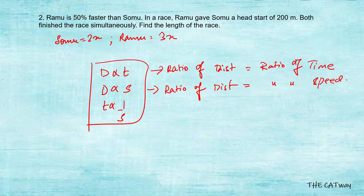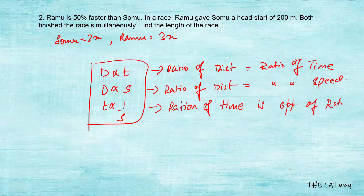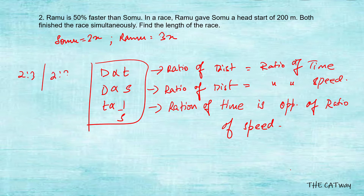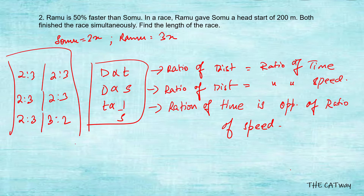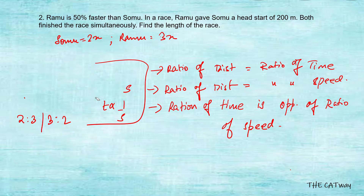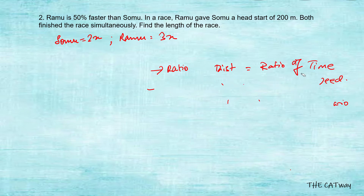To be clear: if the ratio of distance is 2:3, the ratio of time is also 2:3 when speed is constant. If the ratio of distance is 2:3, the ratio of speed is 2:3 when time is constant. If the ratio of time is 2:3, the ratio of speed is 3:2. Remember — for distance and speed, time is constant; for distance and time, speed is constant; for time and speed, distance is constant.